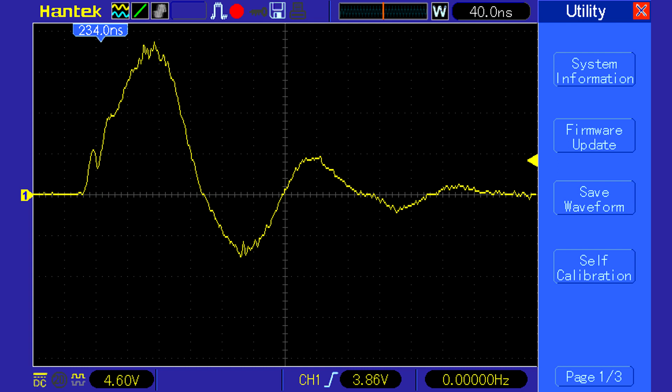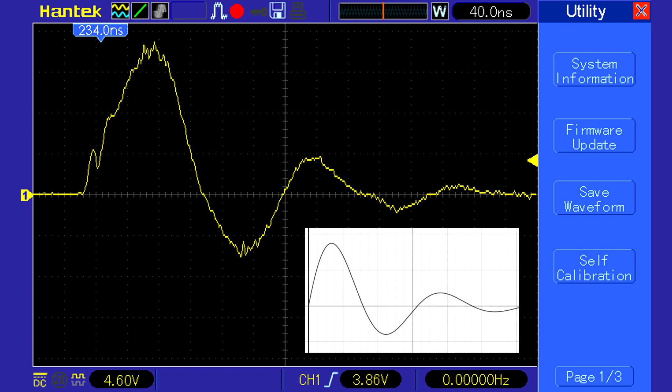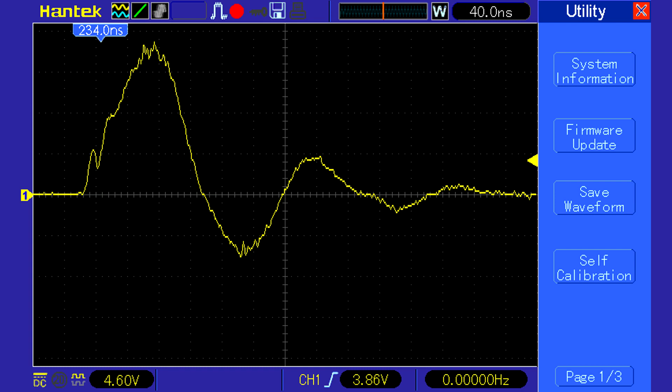After that we can see pretty much what we expect: underdamped LC oscillations. We can also determine the peak current. The voltage peak is 4.6V per division times 3.5 divisions, so about 16V. Now our attenuator divides the voltage by 10, so the voltage at the shunt terminals was 160V. With the 1 ohm resistance of the shunt that gives us about 160A peak.